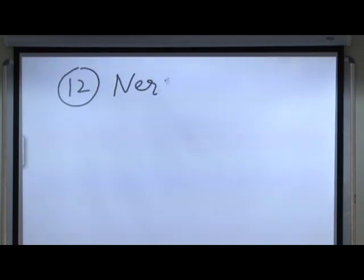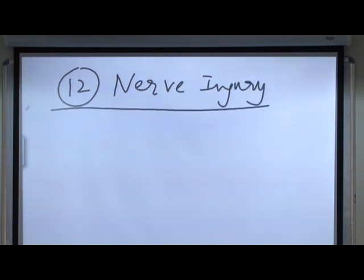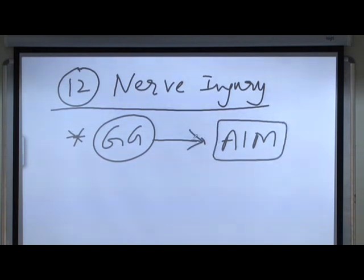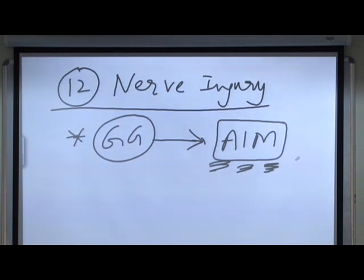The question is hypoglossal nerve injury. When you have this nerve injury, all the tongue muscles are going to be compromised, including genioglossus. Now the muscle genioglossus has been compromised. What is the activity of genioglossus? It is to aim the tongue — it will move the tongue anteriorly, inferiorly, and medially. When the genioglossus muscle is compromised, it is no longer performing tongue protrusion.